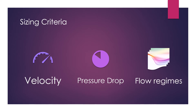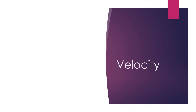Sizing criteria are mainly based on common practice, so they vary between companies. Accordingly, these criteria must be confirmed in every project. When we start sizing a pipe, velocity will be the most important criteria to start with.